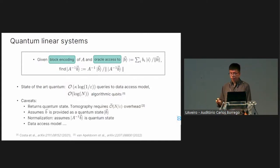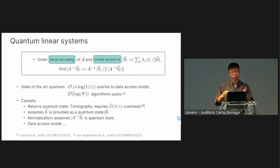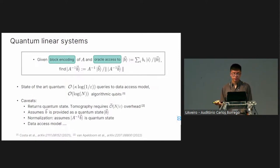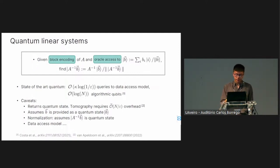However there are many potential caveats. We're returning a quantum state, whereas a classical algorithm returns a full vector — so tomography incurs dimension-dependent overhead. We've assumed the classical vector b is provided as a quantum state, and there are normalizations everywhere. There's also the data access model to deal with, which in this case is a block encoding.